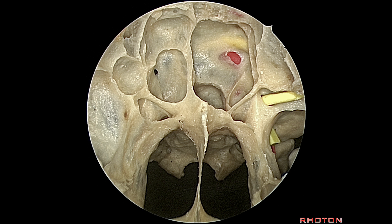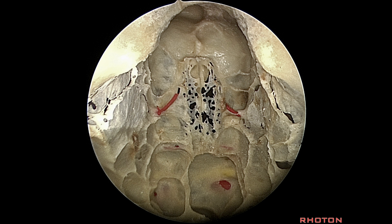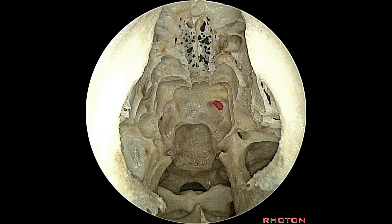Here we see the vidian canal, rotundum, ovale, a spontaneous dehiscence over the cavernous carotid, and the optic canal. Looking at the anterior fossa going through the middle meatus and removing the ethmoid labyrinth, you get this exposure of the anterior fossa, the anterior and posterior ethmoidal arteries, and the cribriform plate.